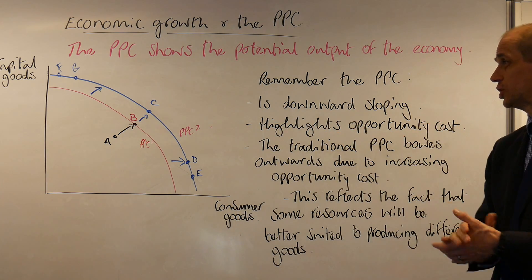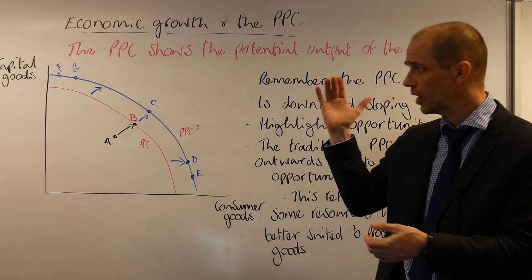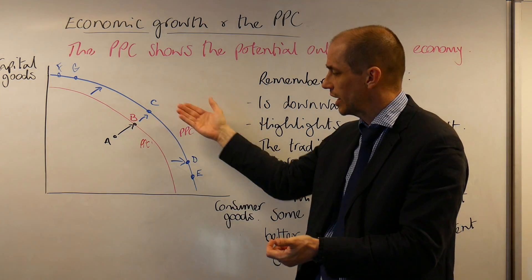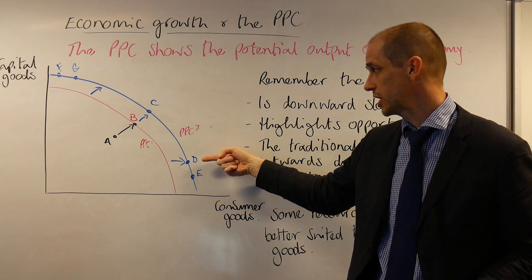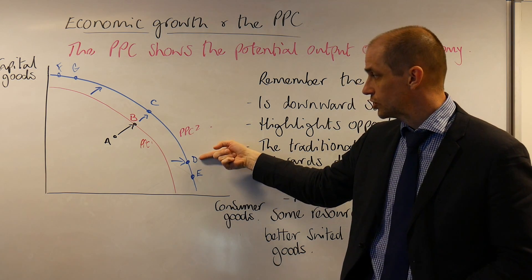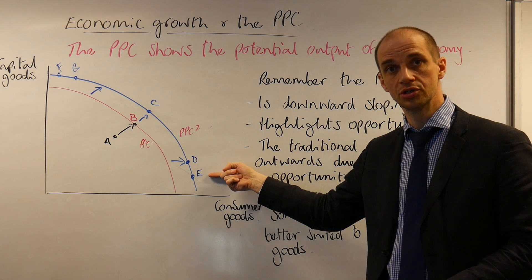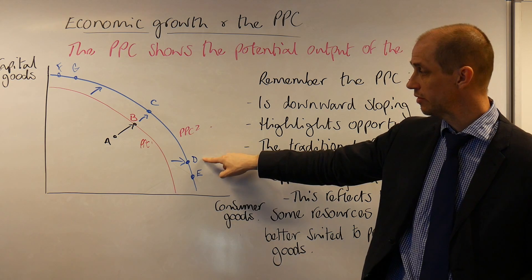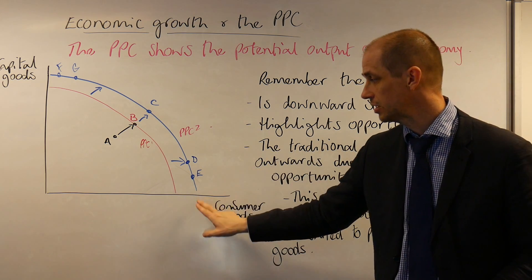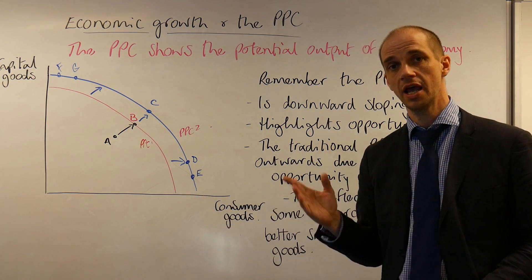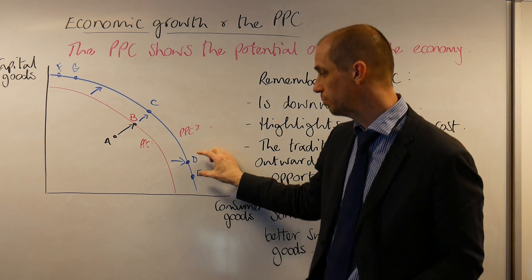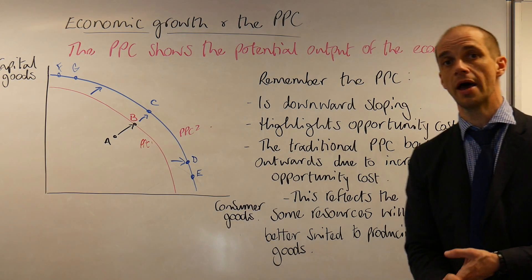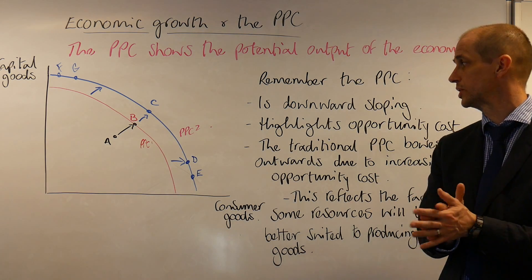Secondly, the PPC highlights opportunity cost — the cost of making a choice. You can determine whether to produce at point D or point E, but the opportunity cost of moving from point D to point E and gaining a small increase in consumer goods would be forgoing a much larger level of capital goods.